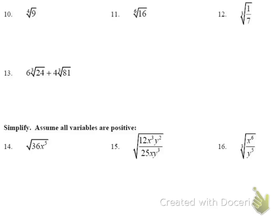Number 10: we're looking for the fourth root of 9. Since 9 is 3 × 3, we can't simplify to a whole number, but we can rewrite it as 3 squared to the 1/4, which becomes 3 to the 2/4, simplifying to 3 to the 1/2 — the square root of 3. It didn't simplify to a whole number, but using properties of exponents and radicals we simplified it further.